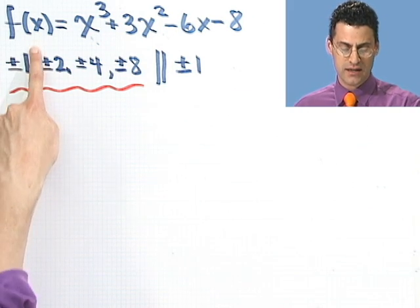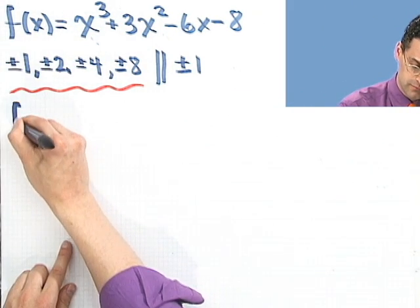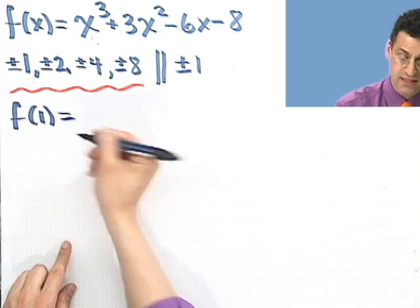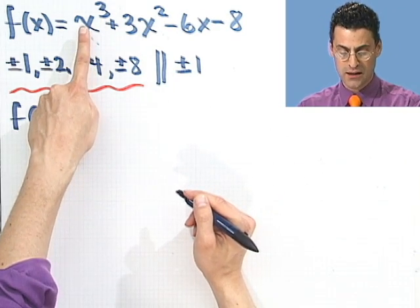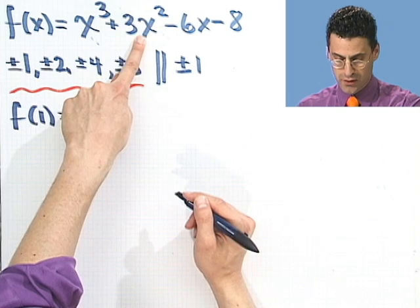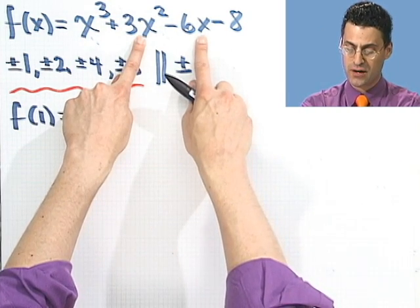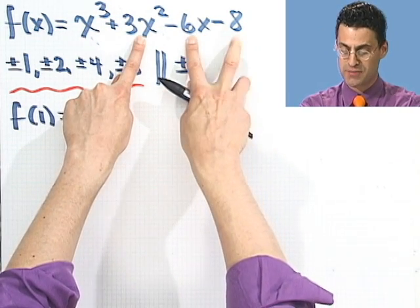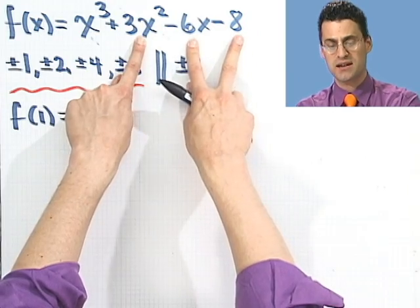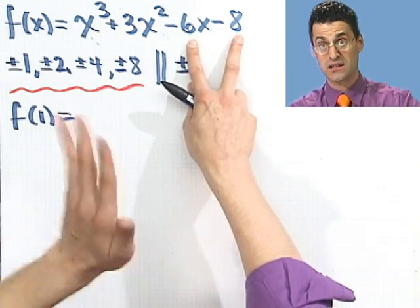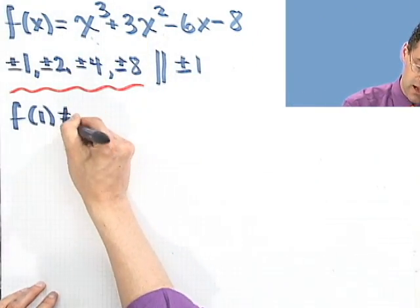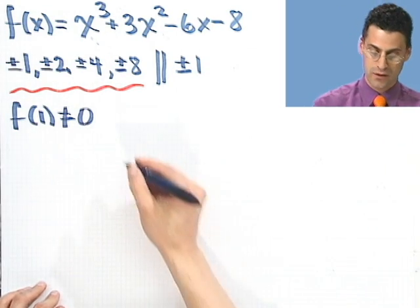If I plug in a 1, let's look at f(1). Is that 0? If I put in a 1, I see 1 + 3 = 4. And then here I'm going to have a -6 - 8. And -6 - 8 + 4 is certainly not 0, it's negative. So in fact, this is not 0.